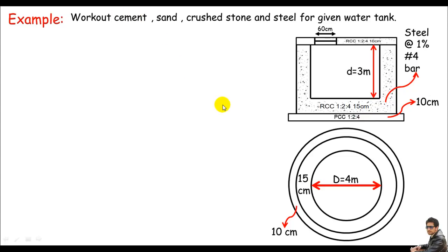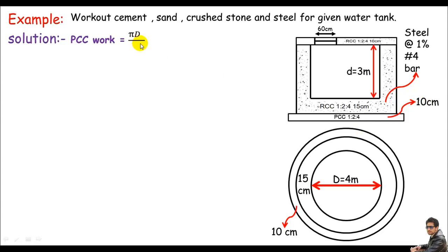My first approach is the PCC work. At the base we have PCC 1:2:4, and the external circle represents the PCC work with thickness 10 cm. I'll calculate the area of this circle and multiply by the thickness to get the PCC volume. The formula is: Volume = π·D²/4 × thickness. We'll go into detail to calculate cement, sand, and crushed stone from this PCC work a little later.